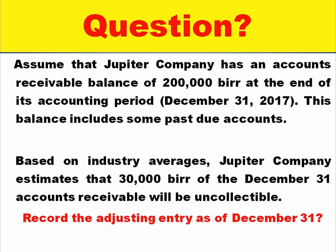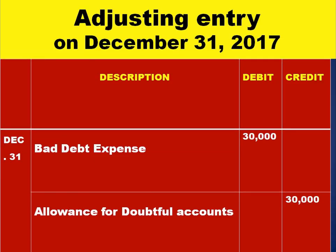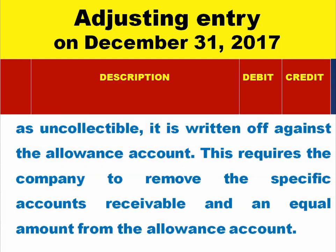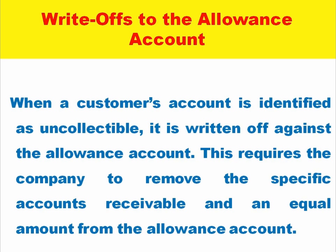The adjusting entry on December 31, 2017: bad debt expense is debited, and allowance for doubtful accounts is credited for $37,000. This records the estimated uncollectable amount under the allowance method at the end of the fiscal year.